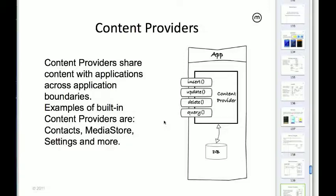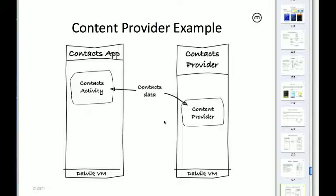Content providers are a way to share data across apps. Applications are in their own sandbox — one app cannot access the data from another. But what if you want to share some data? In my Twitter app, what if I wanted to provide tweets to somebody else on the device? Content providers solve that. The system uses them quite a bit — for sharing media, settings, bookmarks, contacts. Developers tend to usually be users of content providers rather than authors of them.